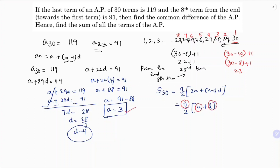Substituting: S₃₀ = 30/2 × (3 + 119) = 15 × 122 = 1830. So the sum of all 30 terms is 1830.